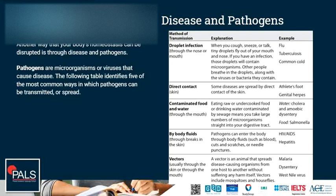The following table identifies five of the most common ways in which pathogens can be transmitted or spread. Through droplet infections — for example, when you cough, sneeze, or talk, tiny droplets fly out of your mouth containing microorganisms that can infect other people. Examples include the flu, tuberculosis, or the common cold.